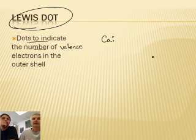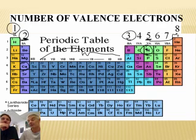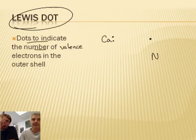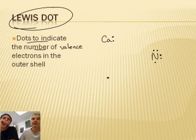So, nitrogen gets five valence electrons. Two of its seven electrons are on the inside — they're called core electrons or kernel electrons. So nitrogen gets five dots around it. That's not very hard, is it?